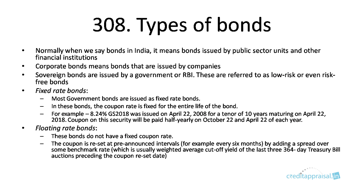One type is the fixed rate bond. Most government bonds are issued as fixed rate bonds. Fixed rate bond means the coupon rate, that is the interest rate, is fixed for the entire life of the bond. For example, GS 2018 8.24% — that is the name of a bond. This bond is issued on April 22, 2008 for 10 years, maturing on April 22, 2018. The coupon of 8.24% will be paid half-yearly on October 22 and April 22 of each year. So the coupon rate is fixed for the entire 10-year period.